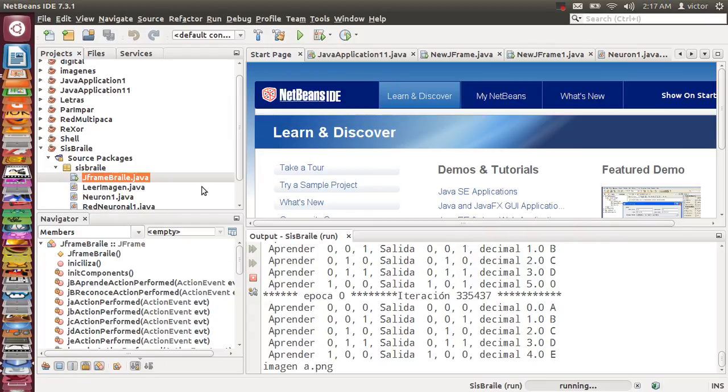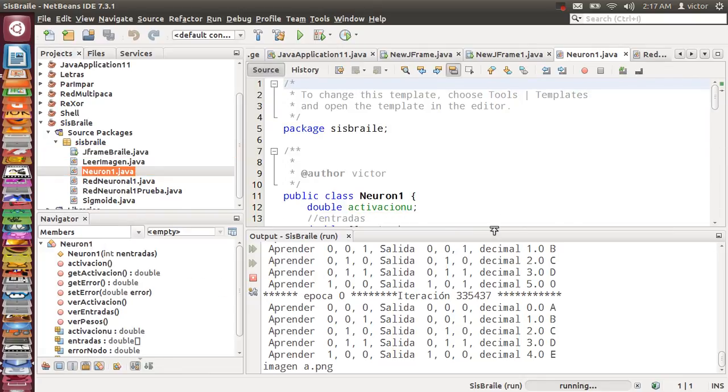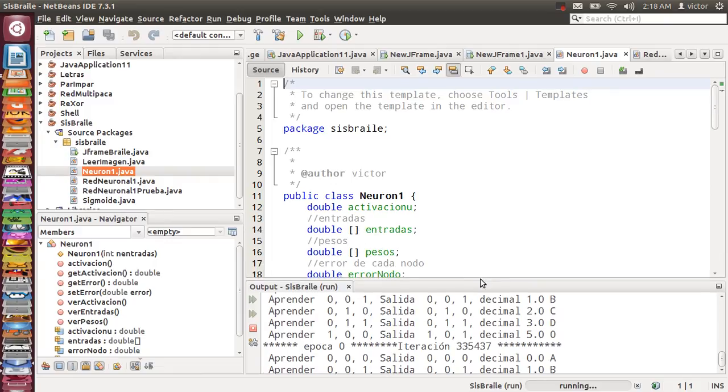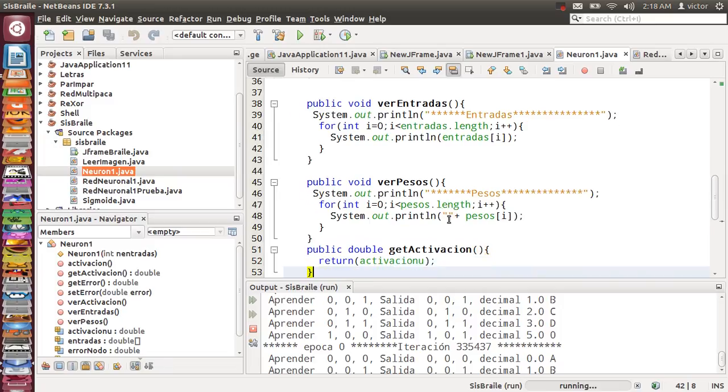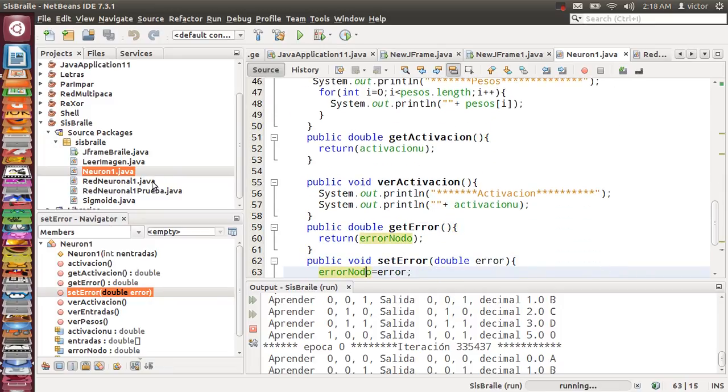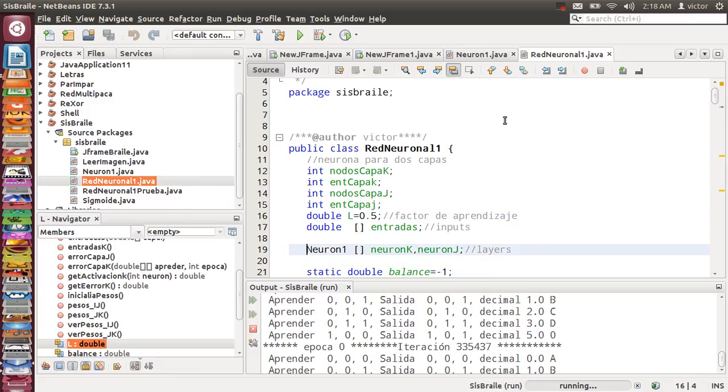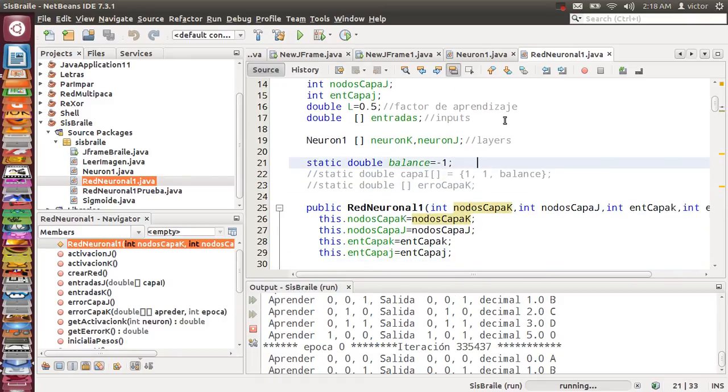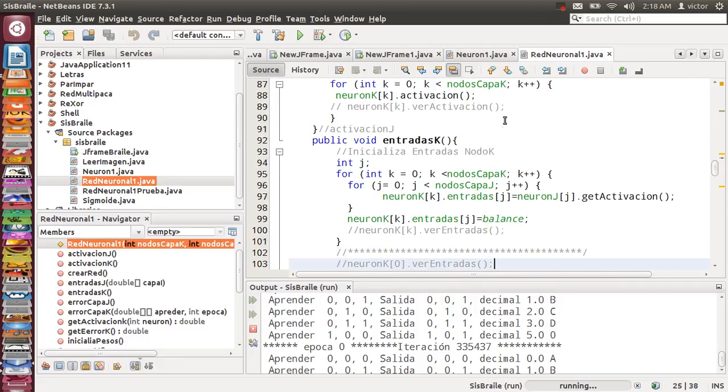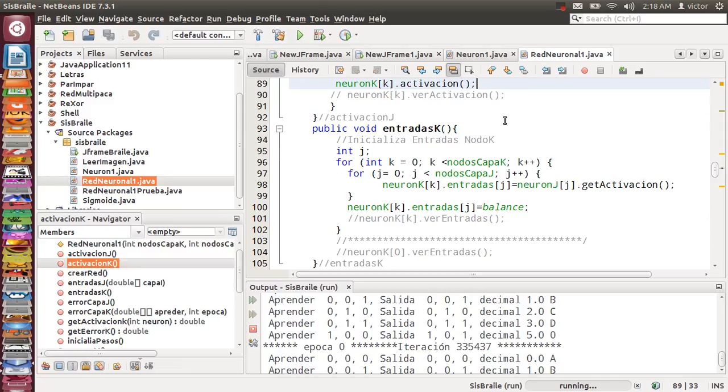Now I'll show you the program in Java. The neural network neuron. This program is written in Spanish. And the network. The network has inputs, layers, and activation function. I hope this program and this video helps you to learn about neural networks. Thank you.